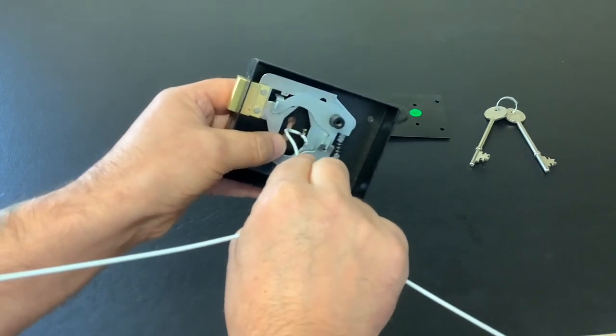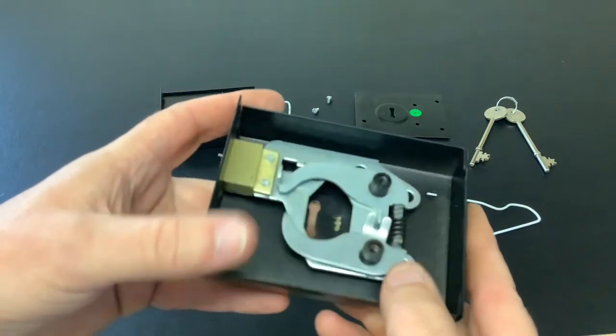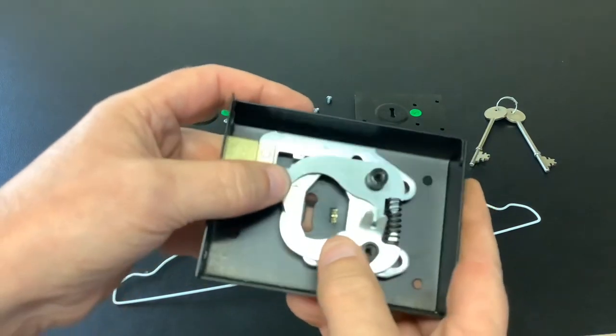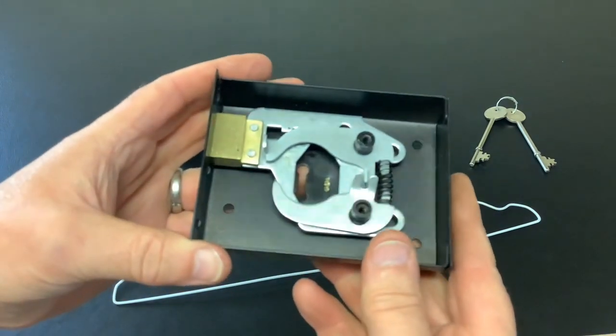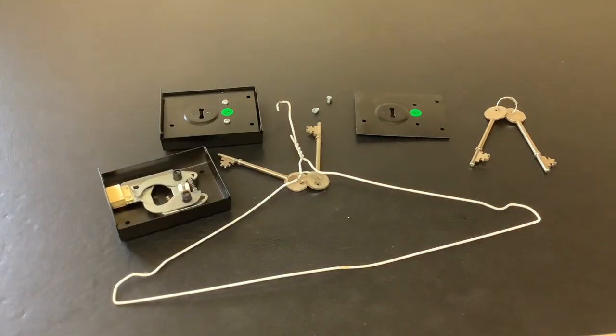And then just push it like that to fully open the bolt. So yeah, that's a simple shed or gate lock with one lever in, picked open using a coat hanger. And that's it for today. As always, thanks for watching, and I'll see you again next time.